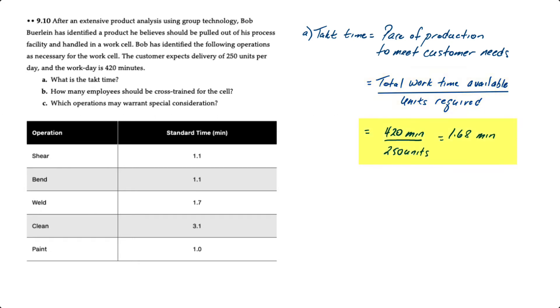So in this case, we have 420 minutes available and the customer requirements are 250 units per day. That equals 1.6 minutes per unit.